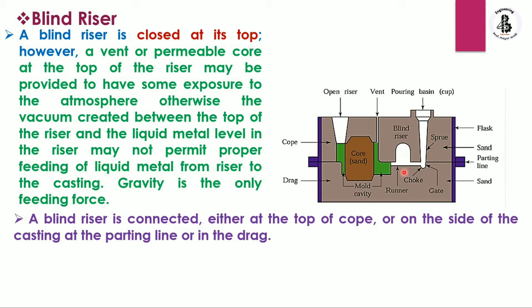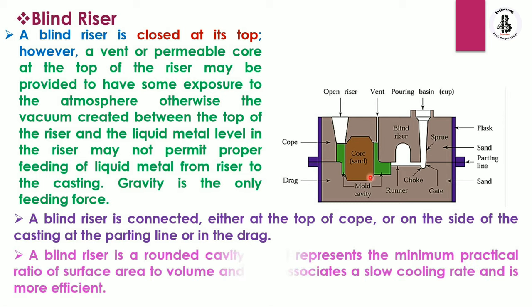All possible locations for a blind riser: it could be on the cope side, on the parting side, or in the drag side, as per requirements. A blind riser is a rounded cavity representing the minimum practical ratio of surface area to volume, which is associated with slow cooling rates, making it more efficient. This controls the slow cooling rates in the mold cavity, which is a major advantage of blind risers.